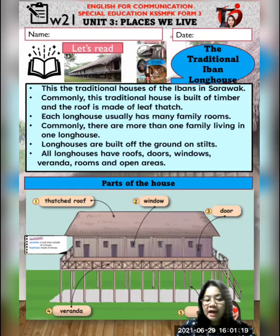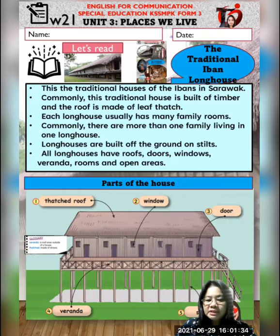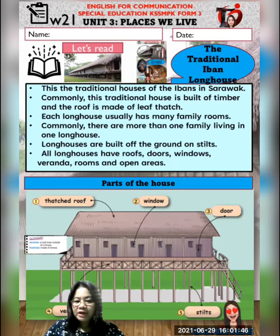Dia kata setiap rumah ini ada banyak bilik. Jadi rumah panjang ni ada banyak keluarga yang tinggal dalam suatu ruang panjang. As you can see, this is the parts of the house - this is the thatch roof, this is the window, this is the door. Dia kata longhouses are built off the ground on stilts. Inilah yang dikenali sebagai stilts - kayu yang panjang di bawah ni.